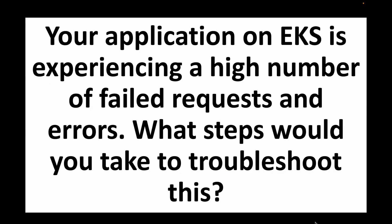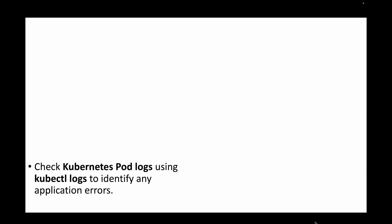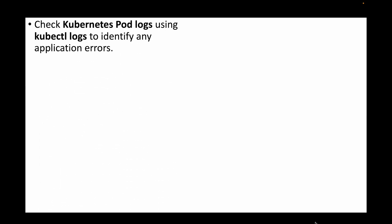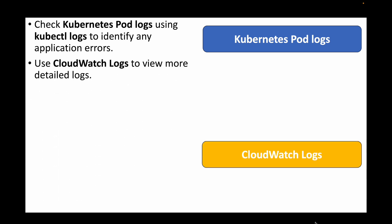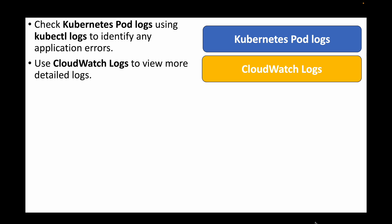The next question is: your application on EKS is experiencing a high number of failed requests and errors. What steps would you take to troubleshoot this? We can check the logs of our Kubernetes pods using kubectl logs to see if there are any application errors.